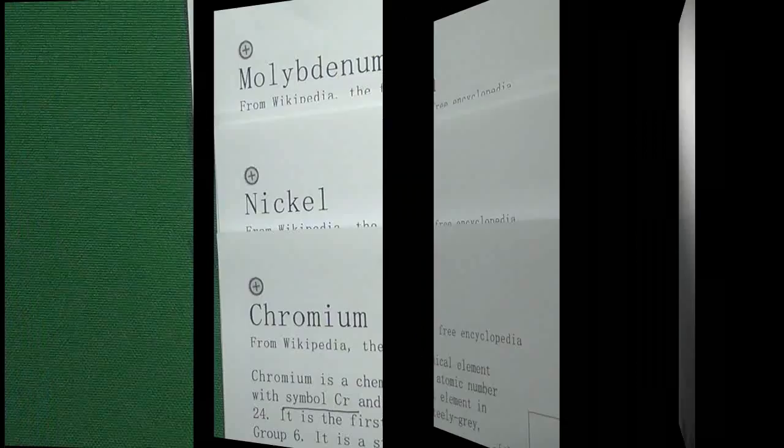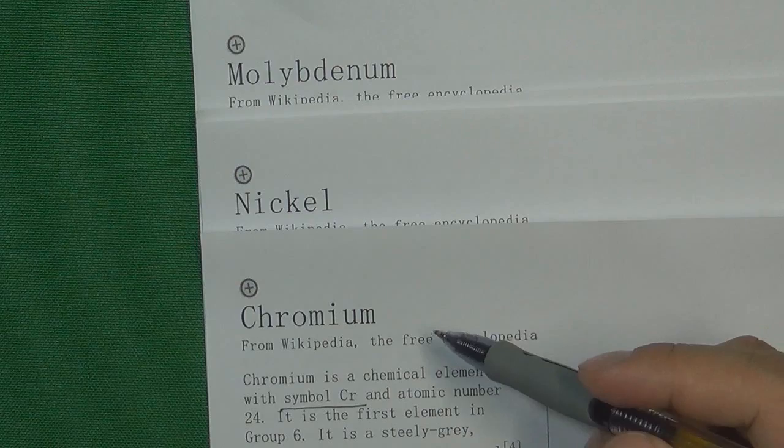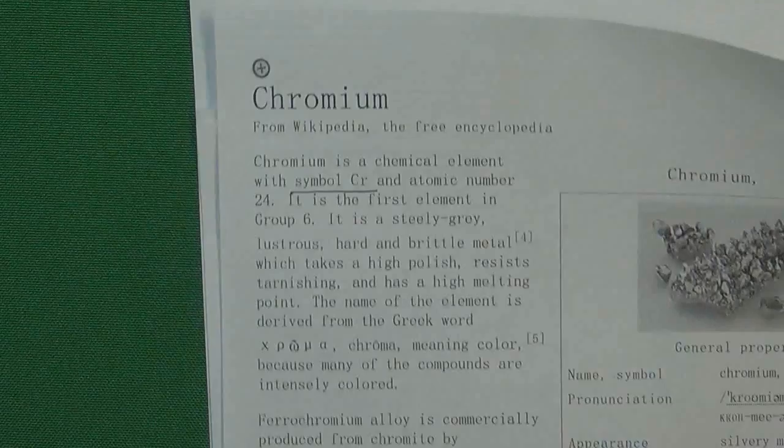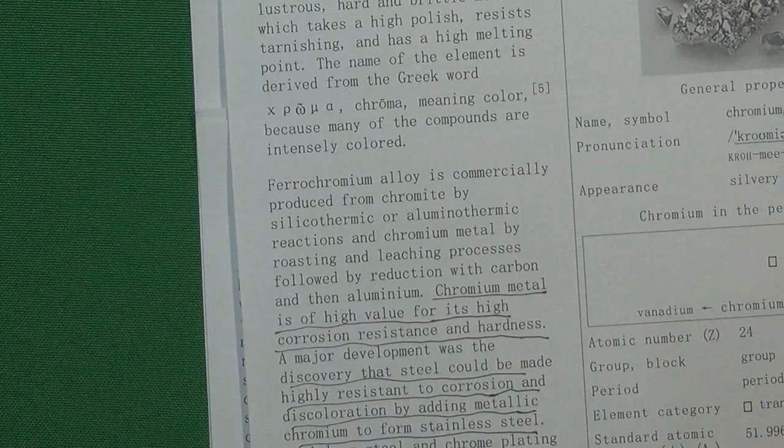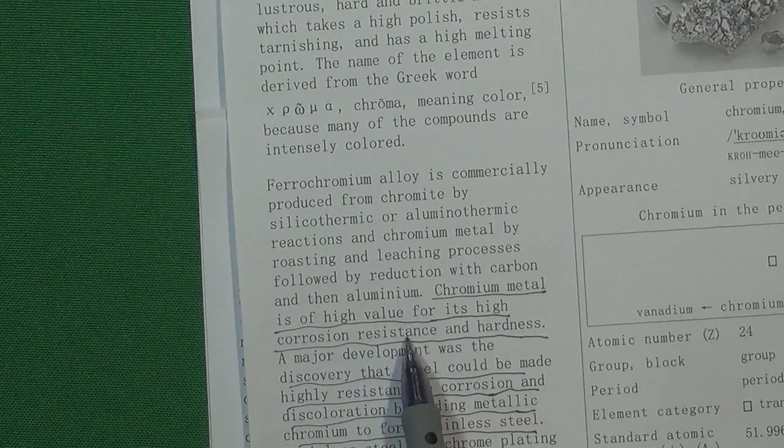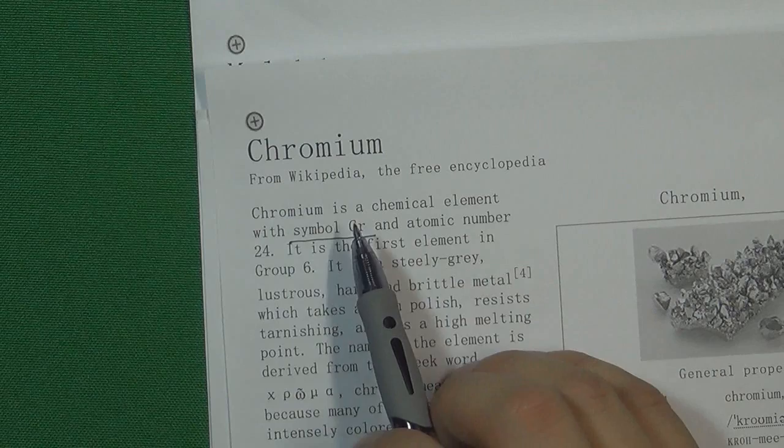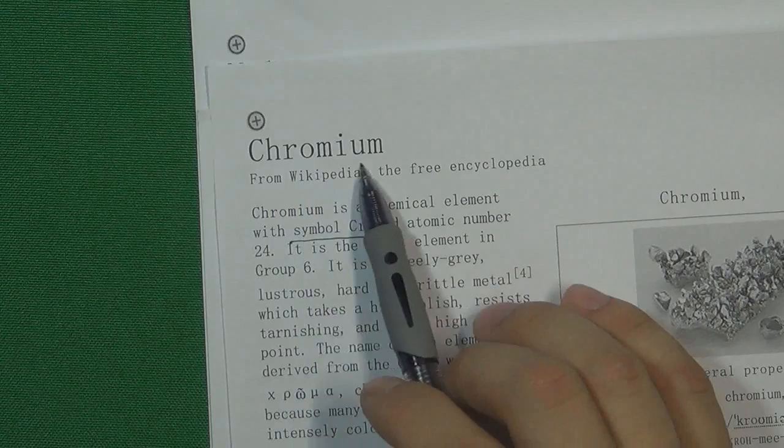Here are the three basic chemical elements inside stainless steel. Let's find out each chemical element's function. The first one is chromium, with symbol Cr. The function of this element is that chromium metal is of high value for its high corrosion resistance. That means this chemical element will make the steel never get corrosion, never get rust. That is the reason why all stainless steels contain a lot of chromium.